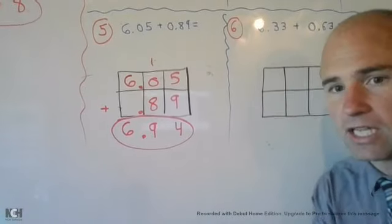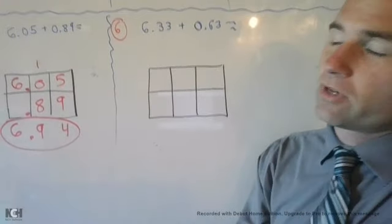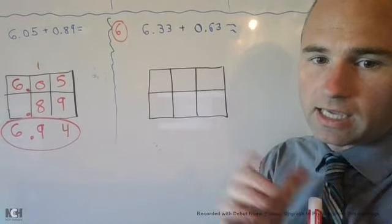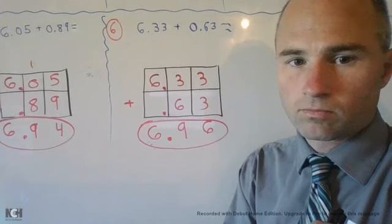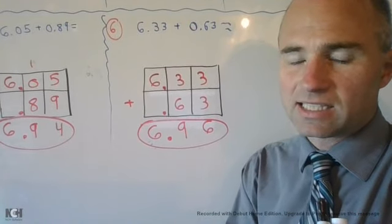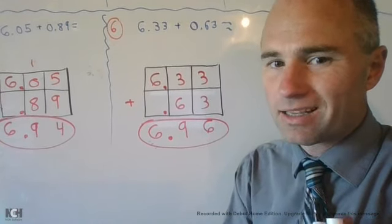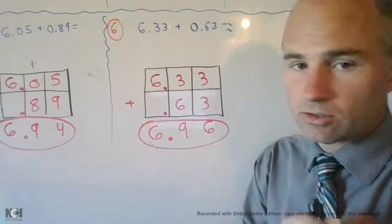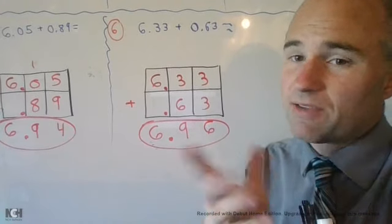All right, last but not least, and then you're going to have 3 exit ticket questions. 6 and 33 hundredths plus 63 hundredths. Go ahead, hit the pause button to add those numbers up now. So, the answer you should have received would have been 6 and 96 hundredths. If you didn't receive that, there's a good chance you didn't line up your place values correctly with putting the decimal points in the correct place.